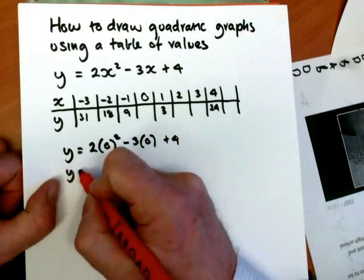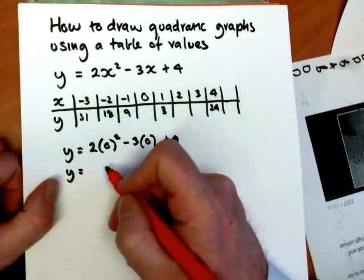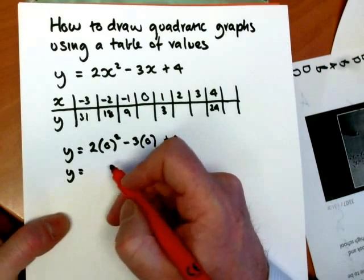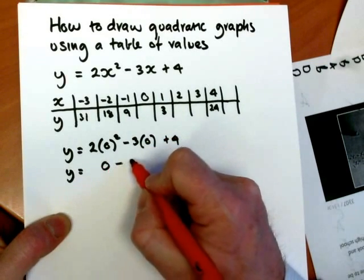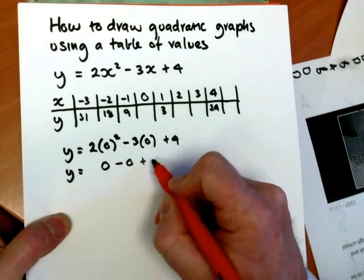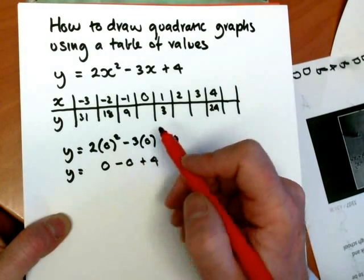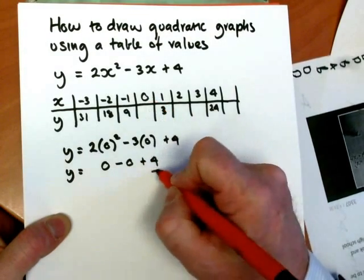So y will equal 2 lots of 0 squared. Now 0 times anything is 0, and so 3 times 0 will also be 0, plus 4. So when x is 0, y is 4.